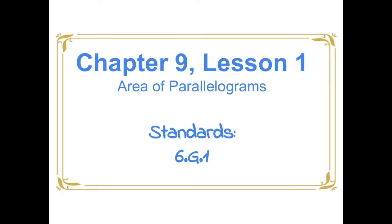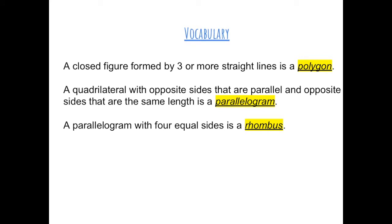Chapter 9, Lesson 1, Area of Parallelograms. Vocabulary: A closed figure formed by three or more straight lines is a polygon. A quadrilateral with opposite sides that are parallel and opposite sides that are the same length is a parallelogram. A parallelogram with four equal sides is called a rhombus.